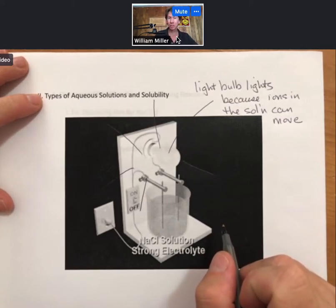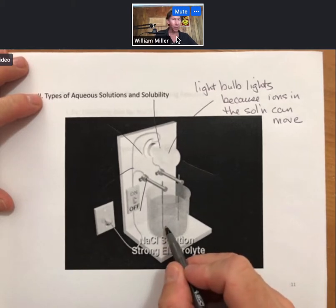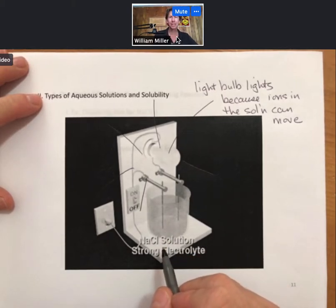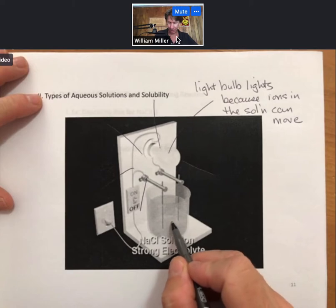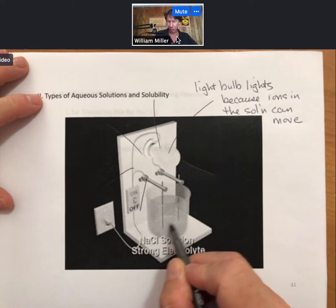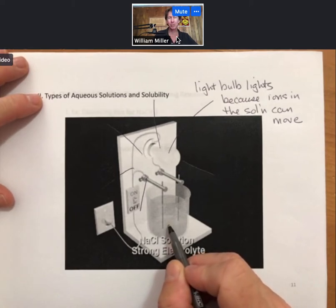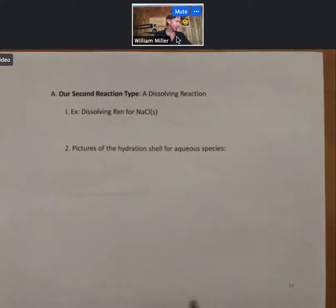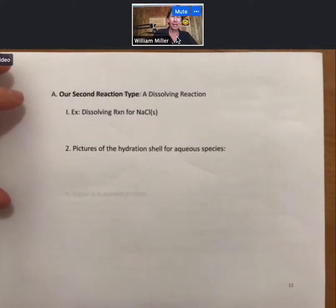That's why the light bulb lights up for sodium chloride. In sugar solutions there are no ions and there's no current, so there's no movement of charge and you can't close the loop.